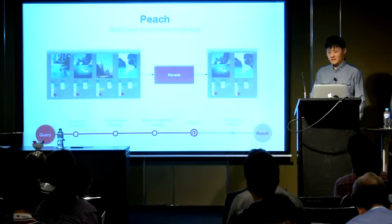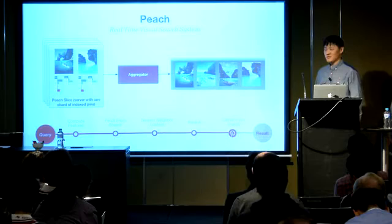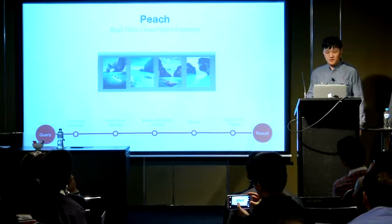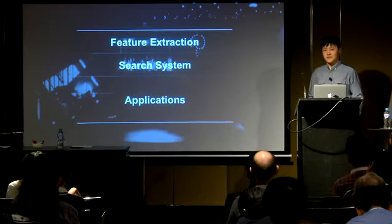The last step of our visual search system is that we take all the results from our shards, and a final aggregator combines these results sorted by visual similarity score. Now you have your visually similar results. We've described the architecture to extract features and do visually similar lookup, and now we want to get into more applications of this technology.